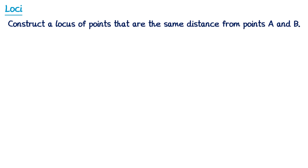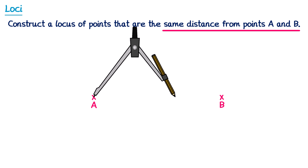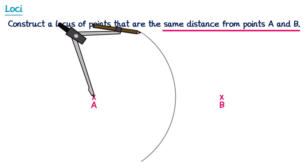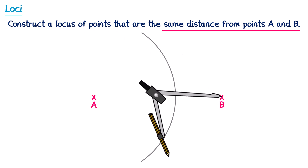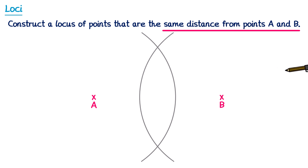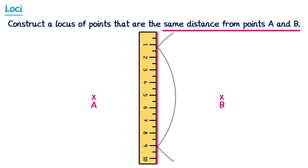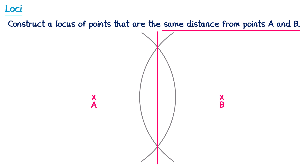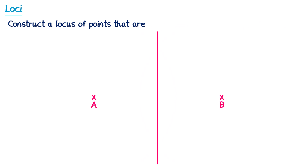For an exam question: construct the locus of points that are the same distance from points A and B. We want the perpendicular bisector. Take a pair of compasses, open them over half the length of the line, draw an arc, then without changing the size repeat at point B. Connect the two intersection points to get the perpendicular bisector, which is the locus. If instead asked for points closer to A than B, any points to the left of this line are closer to A, so we shade that side.